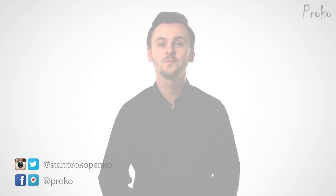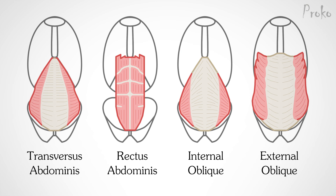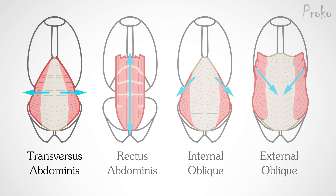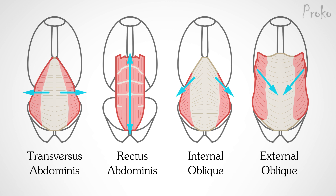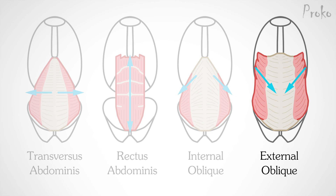Welcome to Proko. I'm Stan Prokopenko. Last time we introduced the four muscle layers of the abdominal wall. We already learned about the vertical rectus abdominis, and we learned about the horizontal transversus abdominis — well, the premium students learned about it. Now let's learn about the diagonal external oblique.